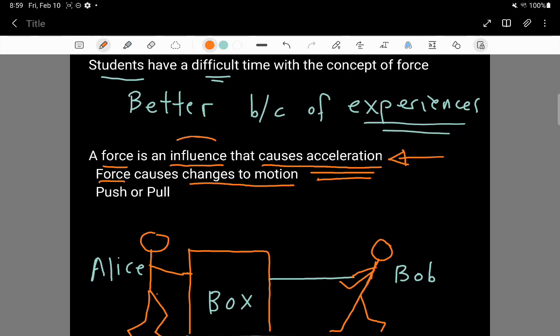There are other influences in nature. For example, you can use heating as an influence to make a change of some property of an object, but heating doesn't change motion. It does not cause acceleration. Heating changes temperature, or it melts a solid into a liquid. So heating is not a force influence.